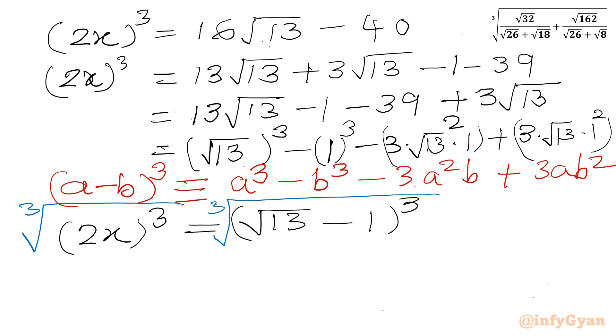So I can write 2x whole cube equal to square root 13 minus 1 whole cube. Now cube and cube root will be cancelled out. I can write here 2x is equal to square root 13 minus 1. After dividing by 2 both sides, we will be getting our final answer, x will become root 13 minus 1 divided by 2.